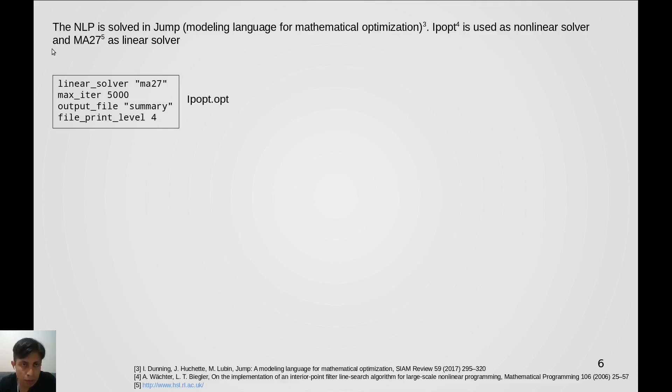The NLP is solved in Jump which is an optimization framework for Julia and we use IPopt as a nonlinear solver and MA27 as linear solver.